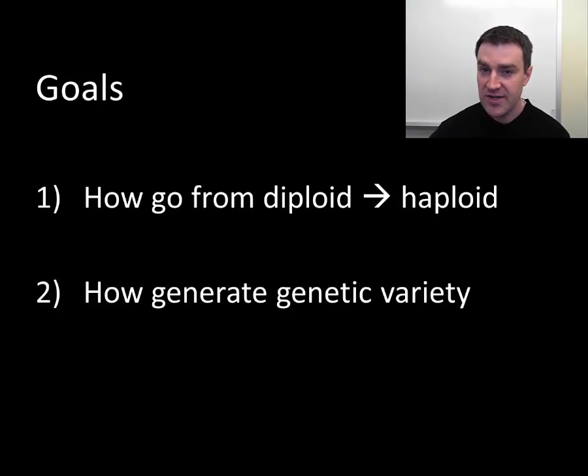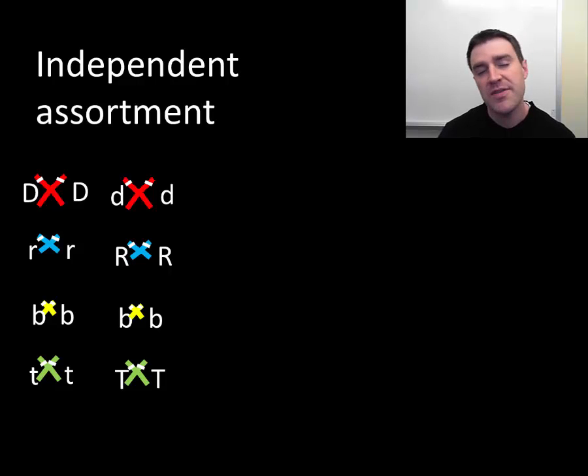There are really two main processes that we're going to discuss here: independent assortment and crossing over. So we'll start with independent assortment.